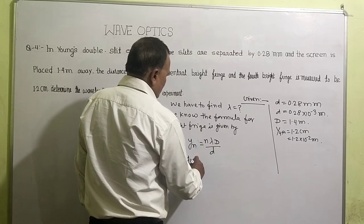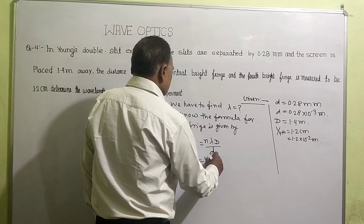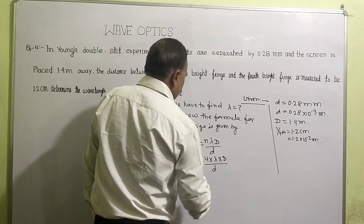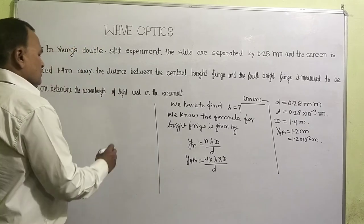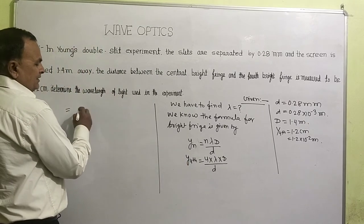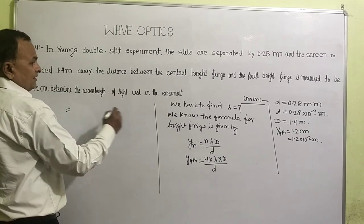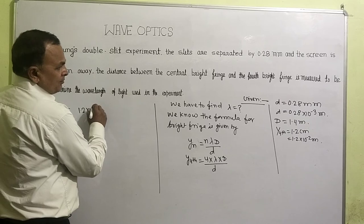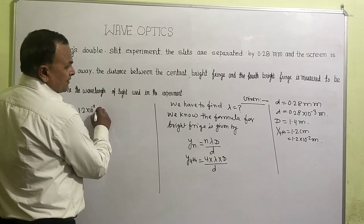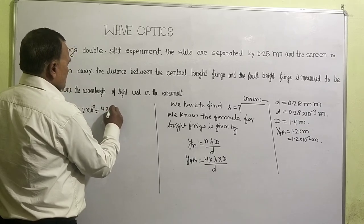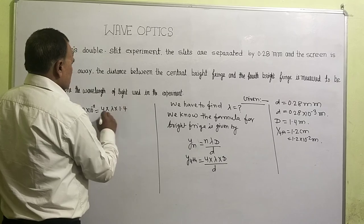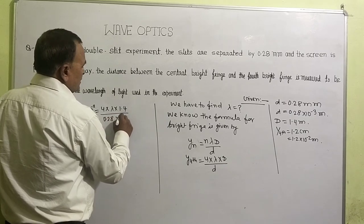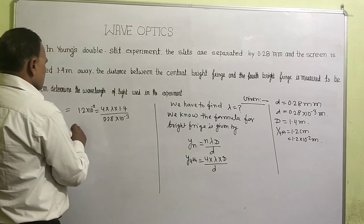Putting yn, y fourth equals 4 into lambda into D by small d. Now y fourth is given 1.2 × 10^-2 meter, that's equal to 4 into lambda into D, 1.4, divided by small d. Small d value equals 0.28 × 10^-3.